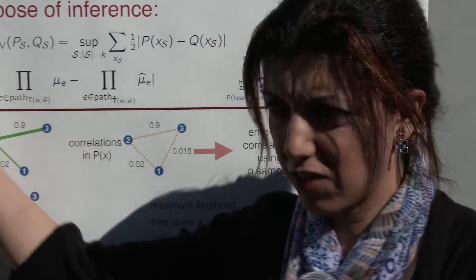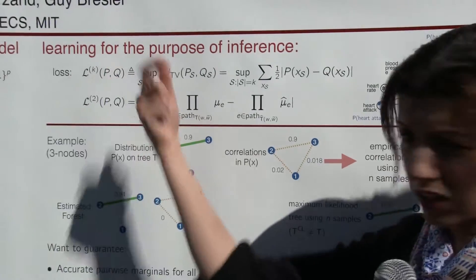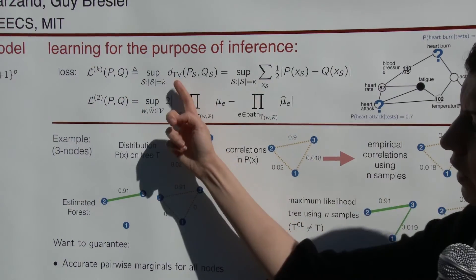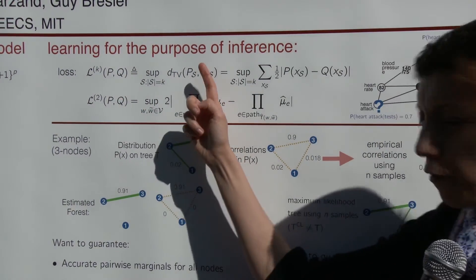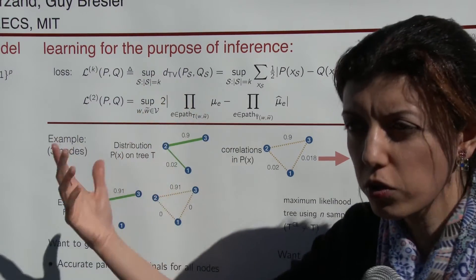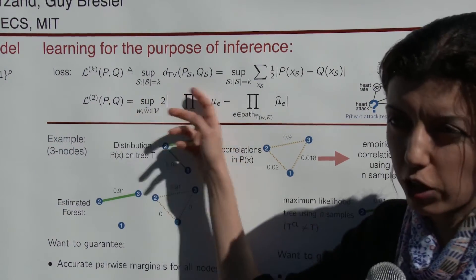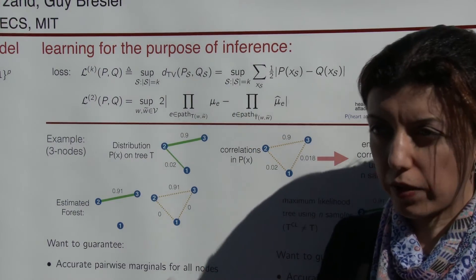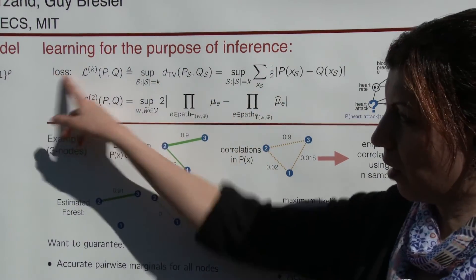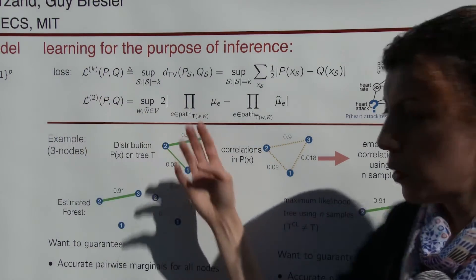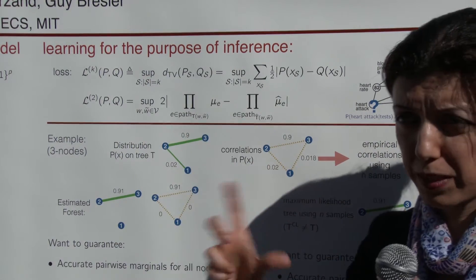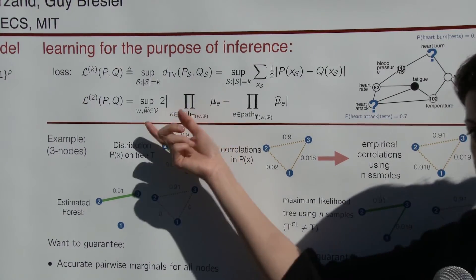That gave us the motivation to introduce a new loss function, which is different from the zero one loss function, which is basically LK between two distributions. What I do is I look at the TV norm between the marginals of P and Q over the set S, and I take the supremum over all sets S. S is a subset of nodes such that its cardinality is equal to K. So I want to make sure that all marginals of size K are accurate with respect to the TV norm. In this work, we're looking at the L2, which is basically guaranteeing that for every pair of nodes in my graph, the correlation between them in the original distribution is estimated correctly.